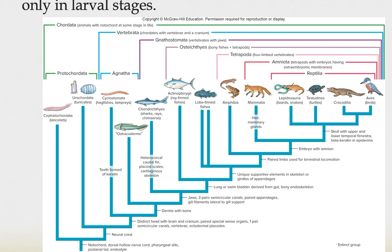Before we go into each of these groups, I also want to remind you that in the hemichordata, that term 'hemi' refers to the fact that they share some characteristics of chordates. While they don't have all five of the synapomorphic characters, they do share two: the hemichordates had a dorsal nerve cord, and they also had pharyngeal gill slits.